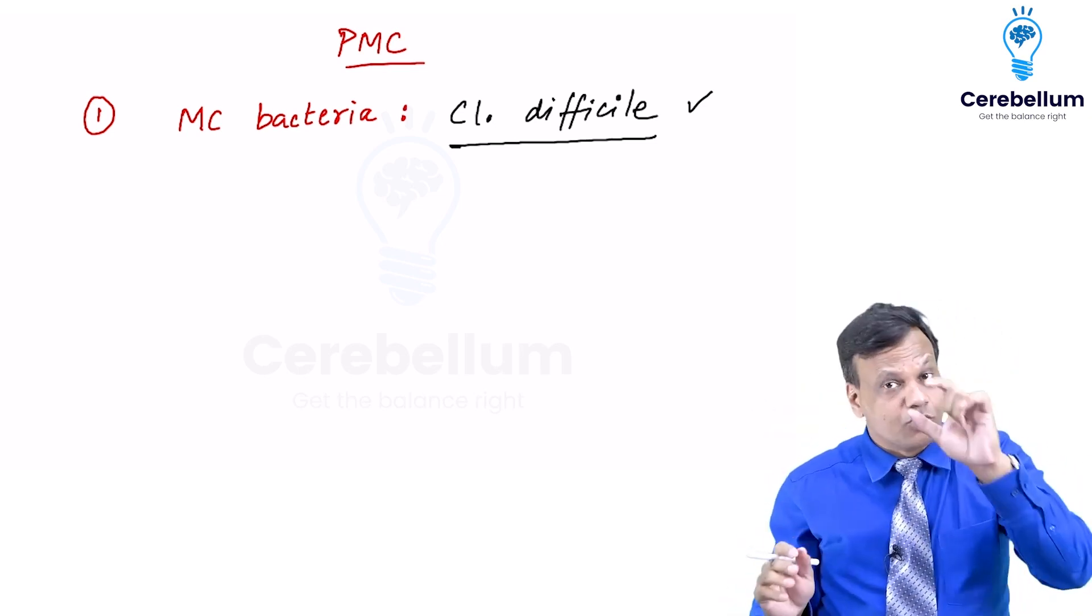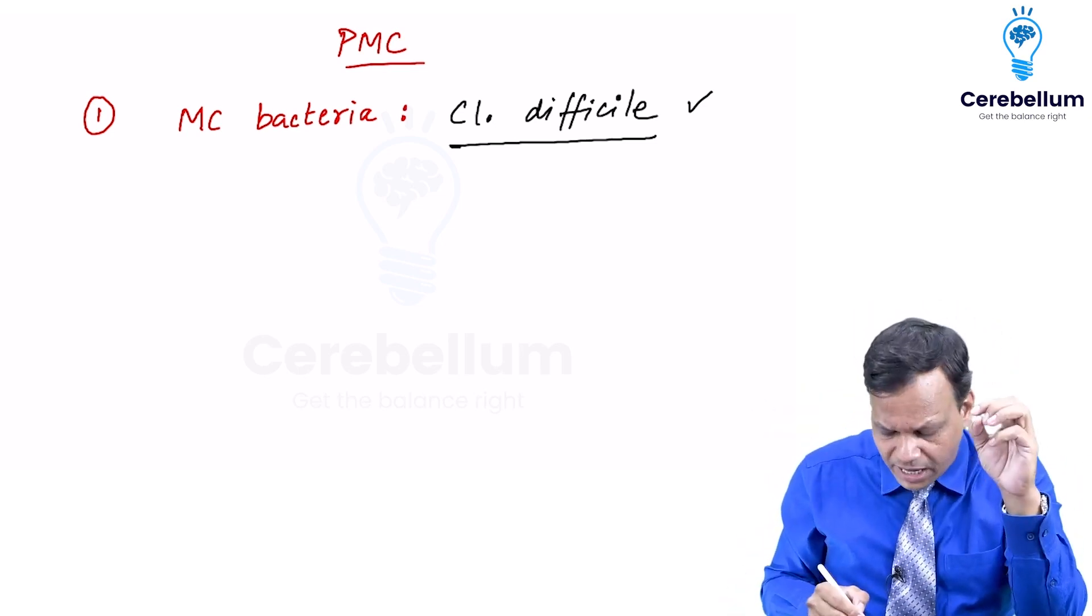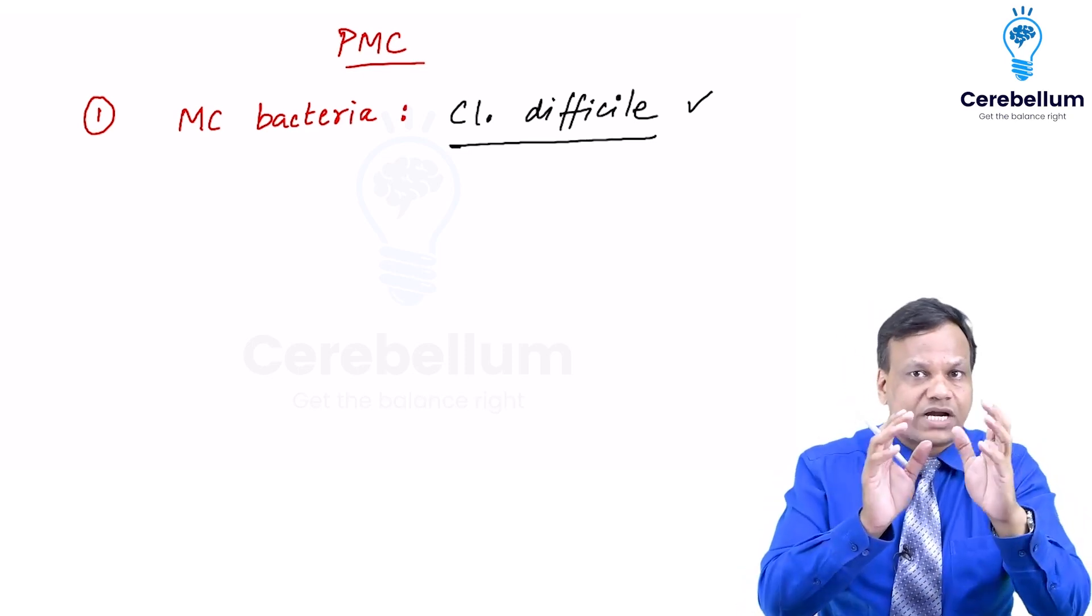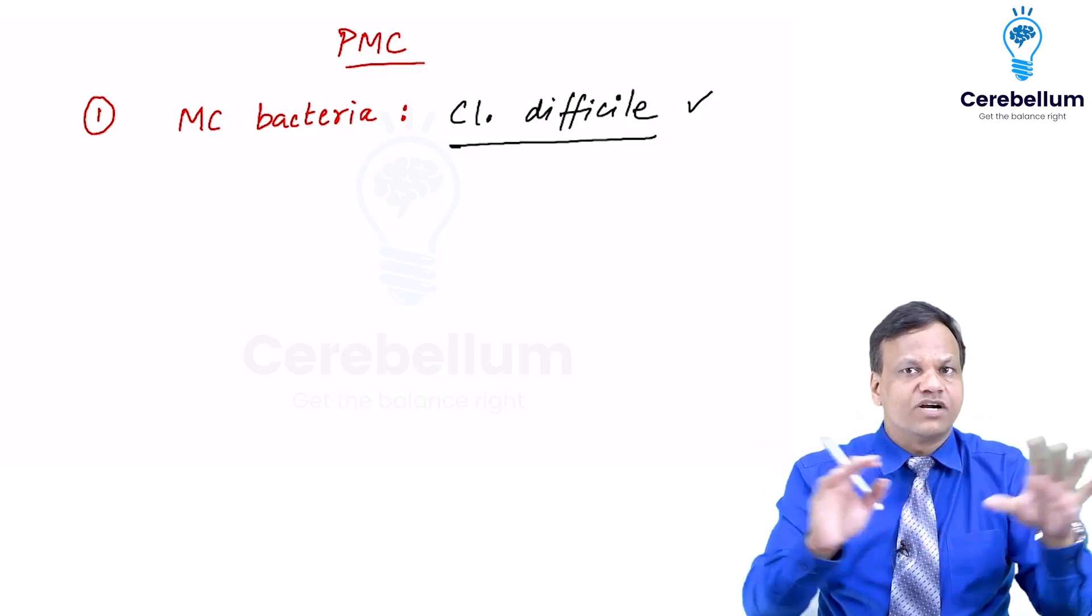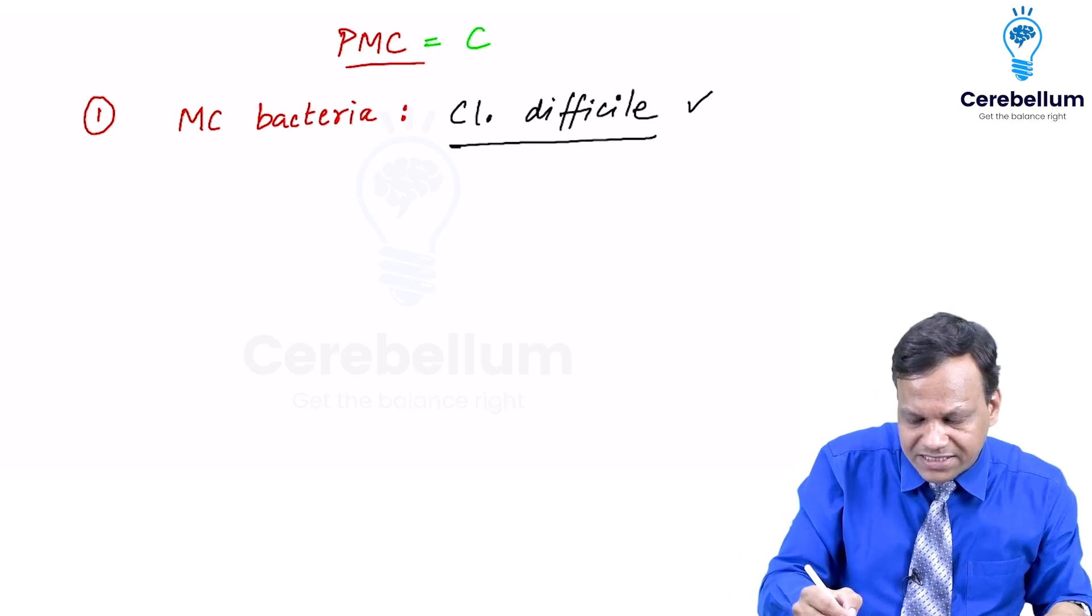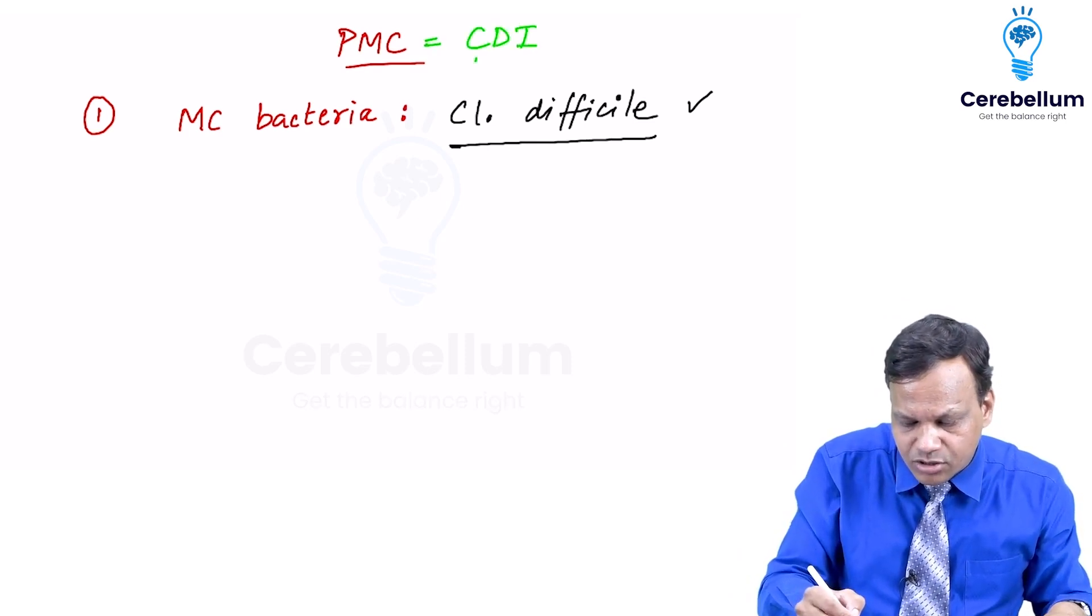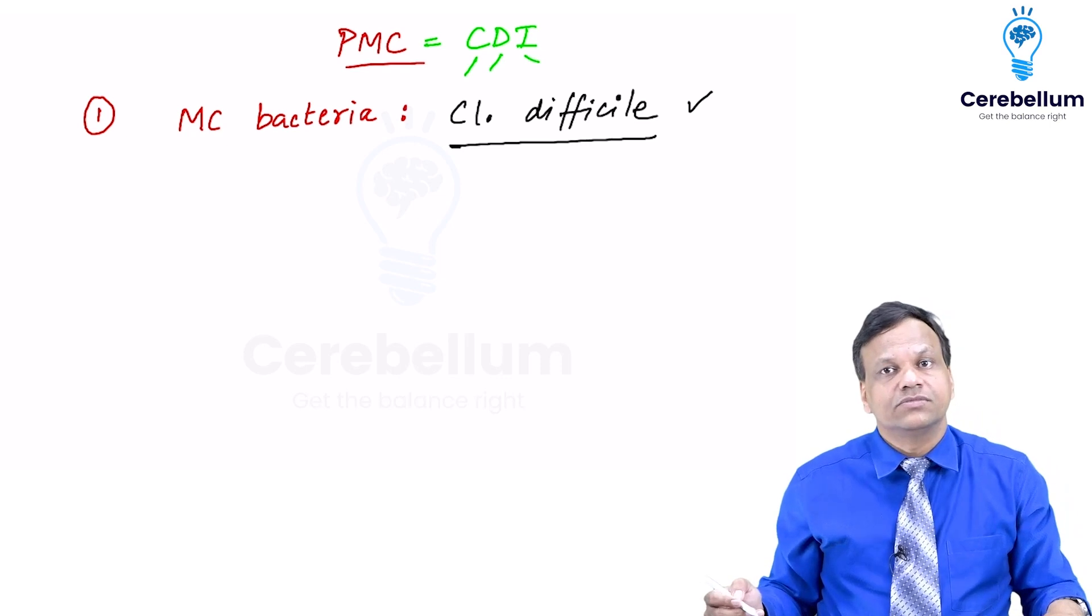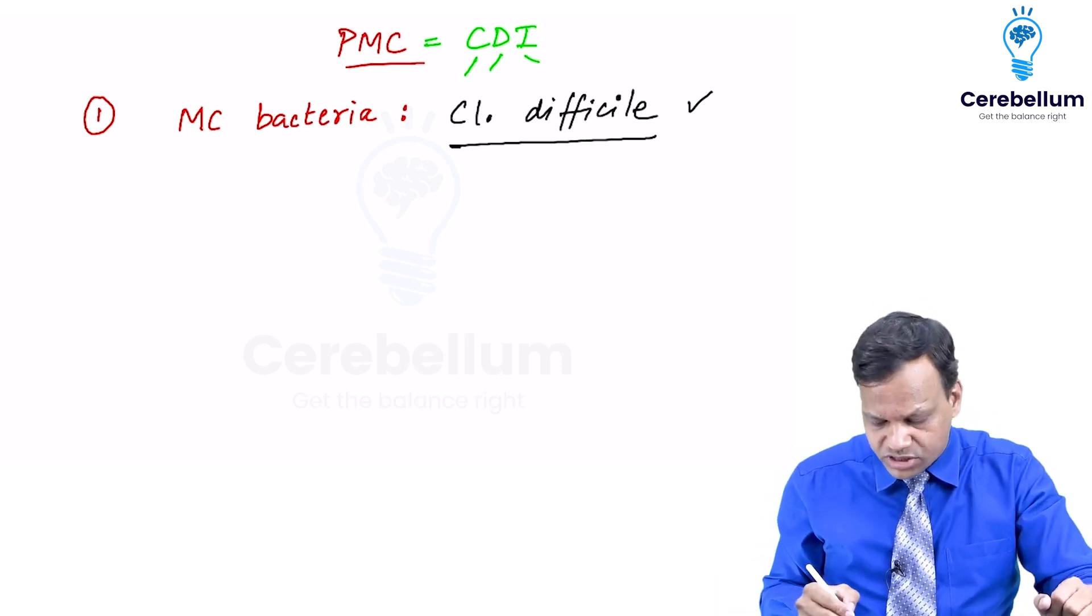Clostridium difficile is the bacteria which most commonly cause pseudomembranous colitis. Any bacteria can cause. Most common is Clostridium difficile and it is so common that if you study Harrison they do not use the word pseudomembranous colitis. They use the word as CDI. CDI is Clostridium difficile infection. So CDI is important. Clostridium difficile.